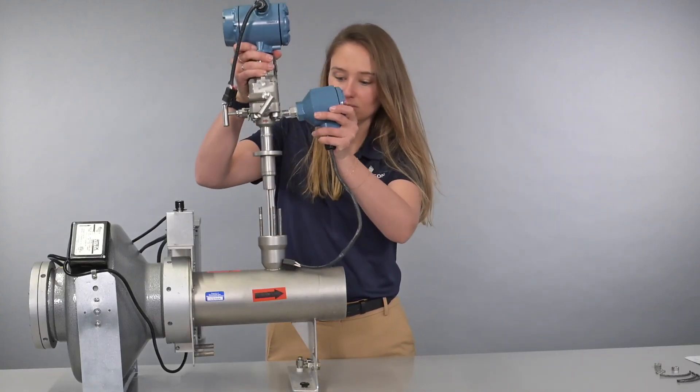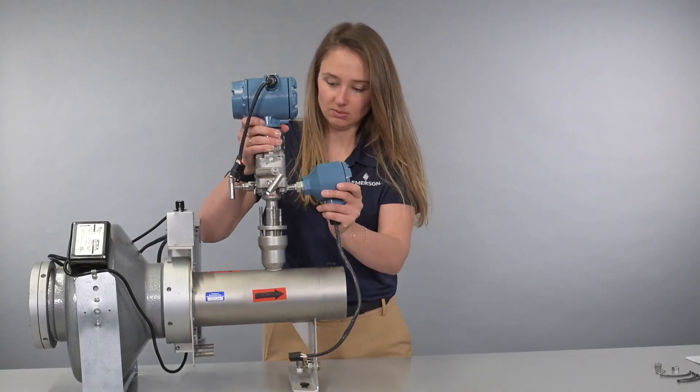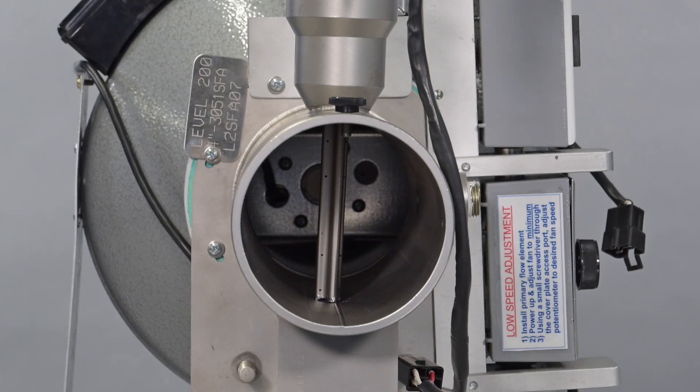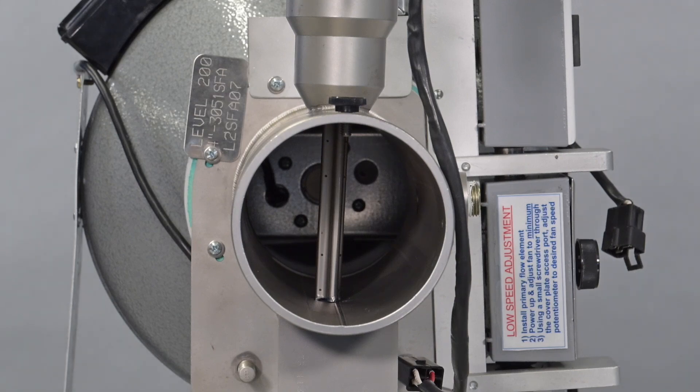Insert the flow meter into the pack lock body. As you can see through this side cross-sectional view, the Anubar should be contacting the opposite wall of the pipe. We have a separate how-to video detailing the process for verifying sensor contact with the opposing wall.